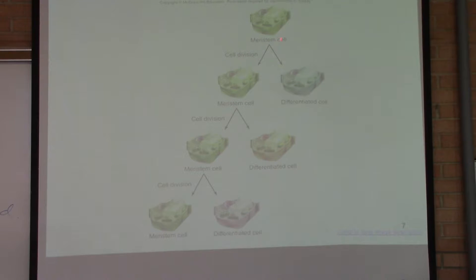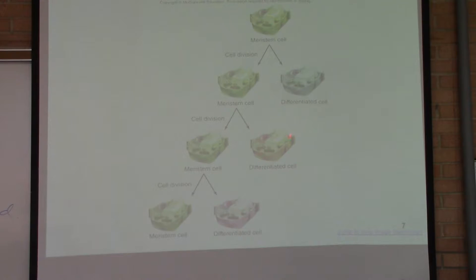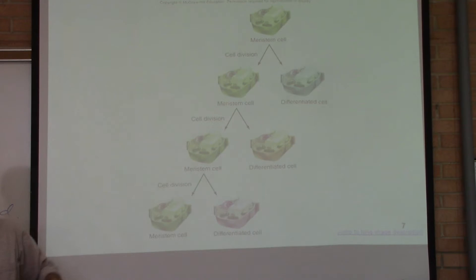Meristematic cells divide to produce their own kind and to make more differentiated types of cells — those epidermal, ground, and other cell types inside the plants are produced from them. Differentiated cells are permanent or terminal cells; they perform a function, and then they are replaced or die. They don't have the ability to divide themselves — what produces more cells are the meristematic cells.